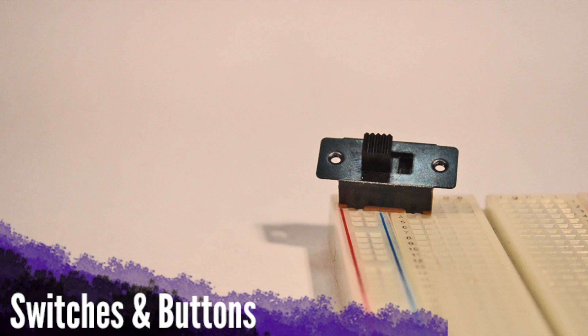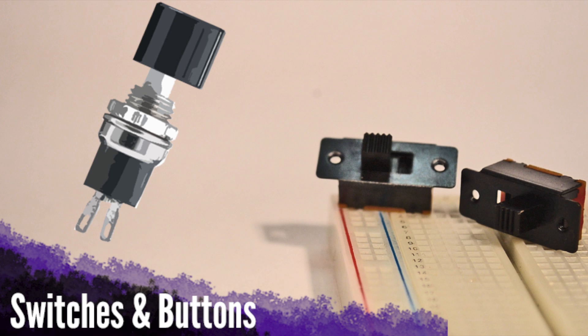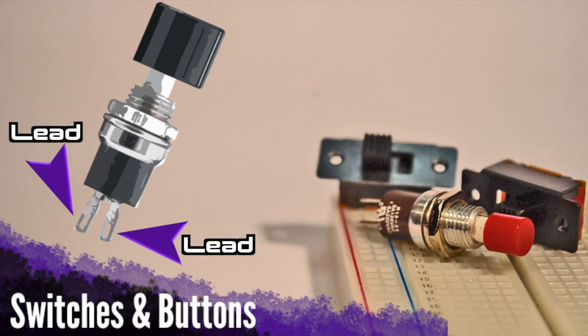Buttons come in all shapes and sizes, but you can typically think of all buttons as having two leads with a midsection that can be connected or disconnected depending on whether or not you press it.